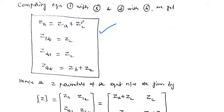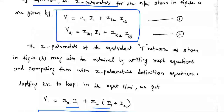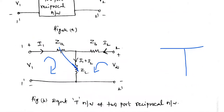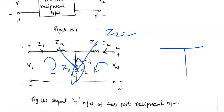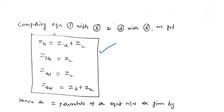So what is Z11? It is the addition of ZA and ZC. You can see in the equivalent structure: the addition of ZA and ZC is Z11, the addition of ZB and ZC is Z22, and ZC — the common center element — is called Z12 or Z21. So we can relate these values. This is the relation between Z-parameter and the equivalent T network values.